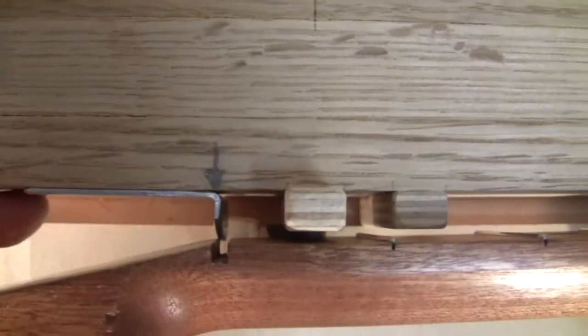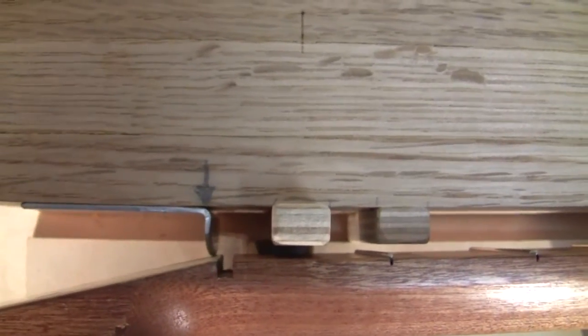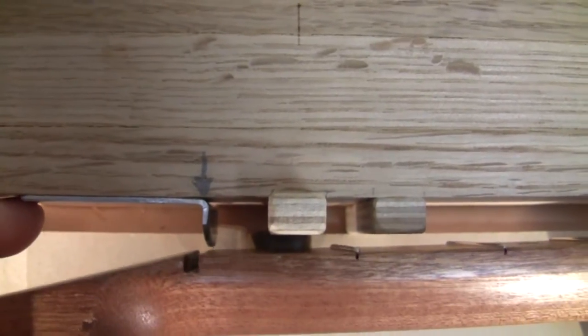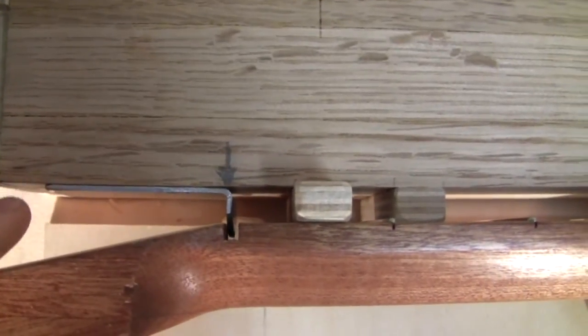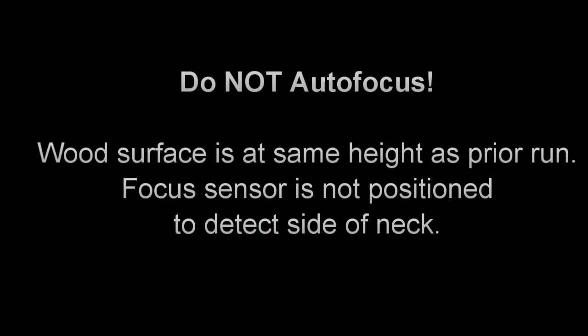Here's a picture of that tab in the nut slot. As long as it's in the slot that's fine, but you don't want to have it positioned like that or that. That would create some bad marks on your neck. So in the slot anywhere. Now it's very important that you don't autofocus because the focus sensor is not positioned to detect that side of the neck. I've designed the fixture so the side of the neck is at the same height as the prior fretboard surface.